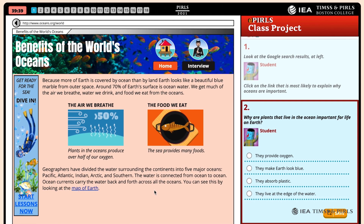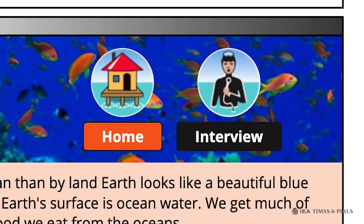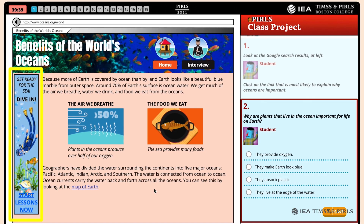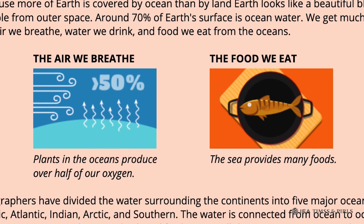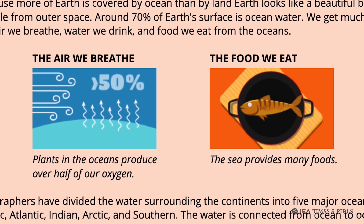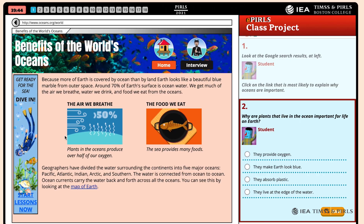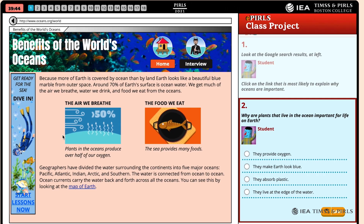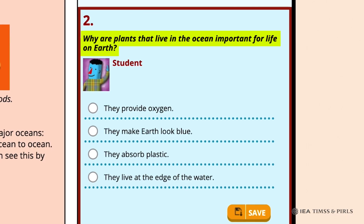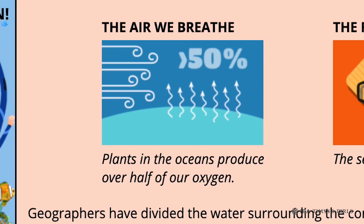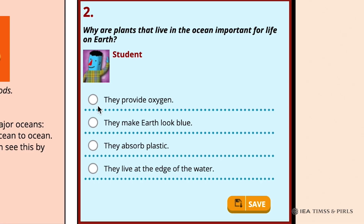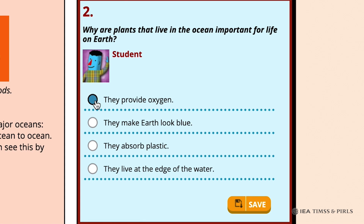The Benefits homepage has two icons for home and interview, an advertisement for diving lessons, as well as text and graphics about the major benefits of the oceans: air, water, and food. In question two, students are asked why the plants in the ocean are important for life on Earth. Based on the caption under 'The Air We Breathe,' students should choose the first option — that plants provide oxygen.